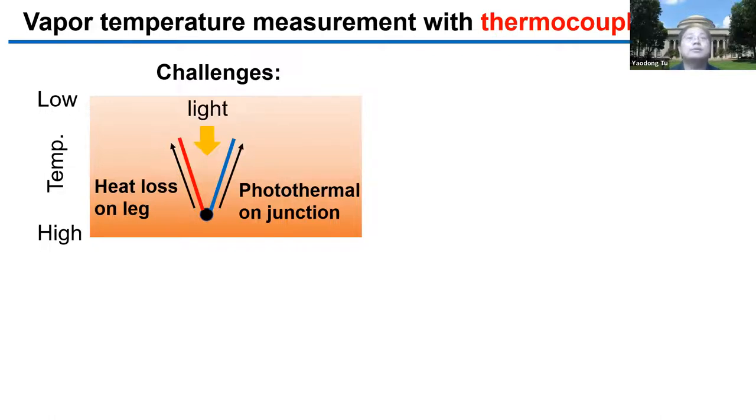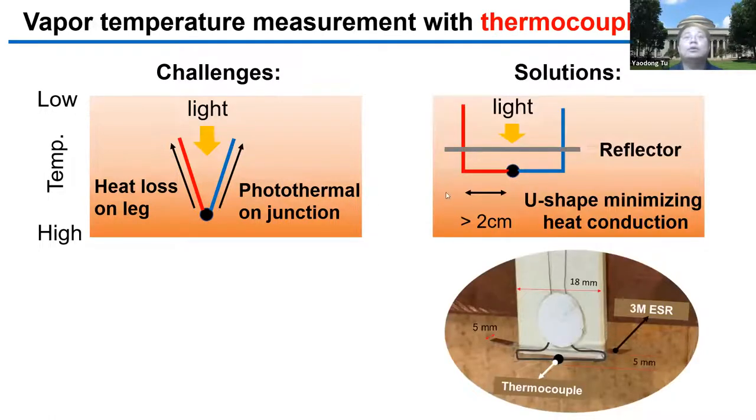Here, we propose a solution. We can use a U-shaped thermocouple, and its horizontal length is long enough. We also put a highly reflective film over the thermocouple to block the direct light shining onto the thermocouple. Based on the heat transfer analysis, we find out these strategies can significantly reduce the measurement error.